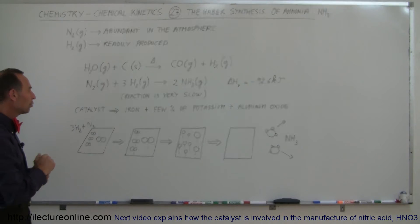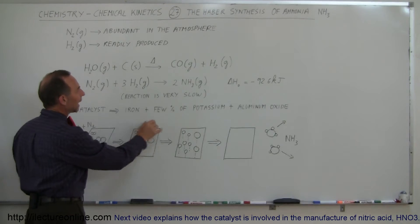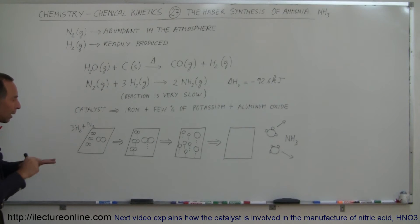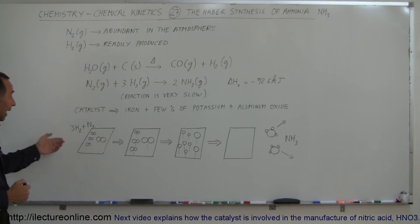So how do we do that? We produce what we call a catalyst. We take a metal plate made from iron, and we add a few percent of potassium and aluminum oxide mixed in with the iron, and we use that as a site over which the reaction takes place.